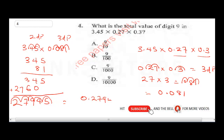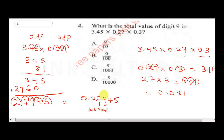The question asks for the place value of digit 9 in 0.27945. The 9 is in the thousandths position, so its value is nine over one thousand. The correct answer is C.